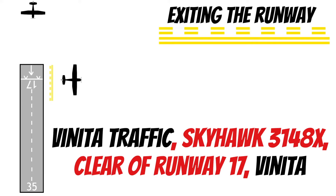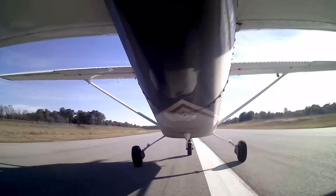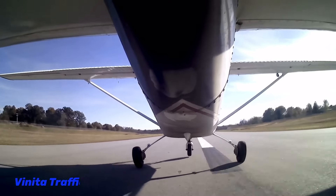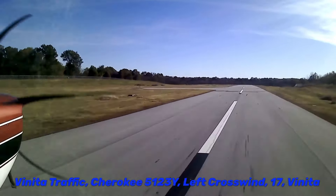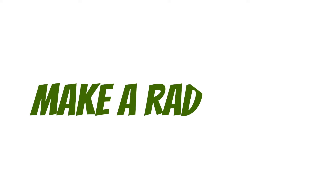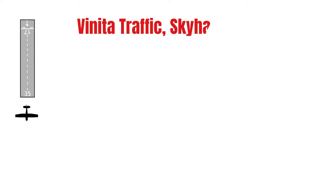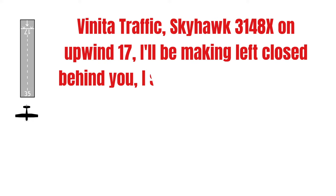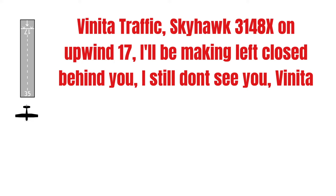Those are the only non-towered radio calls the FAA recommends. But let's say I take off from runway 1-7 and hear: 'Veneta traffic, Cherokee 5123 Yankee, left crosswind, 1-7, Veneta.' I don't know exactly where this pilot is, but I know he's somewhere right in front of me — a potential conflict. We need to make a radio call so this guy knows to be looking for us too. Here's an example: 'Veneta traffic, Skyhawk 3148 X-ray, on upwind 1-7, I'll be making left traffic — I still don't see you, Veneta.' I only do this when trying to resolve a potential conflict, and this is the best way to do it in my opinion.